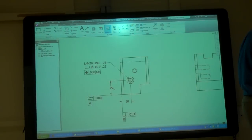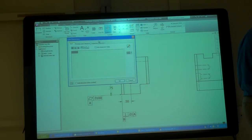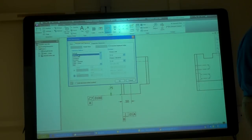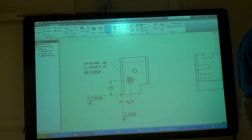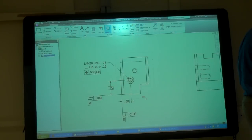So for that, you click on the dimension, go to edit, tolerance, basic. Use the box. Okay.